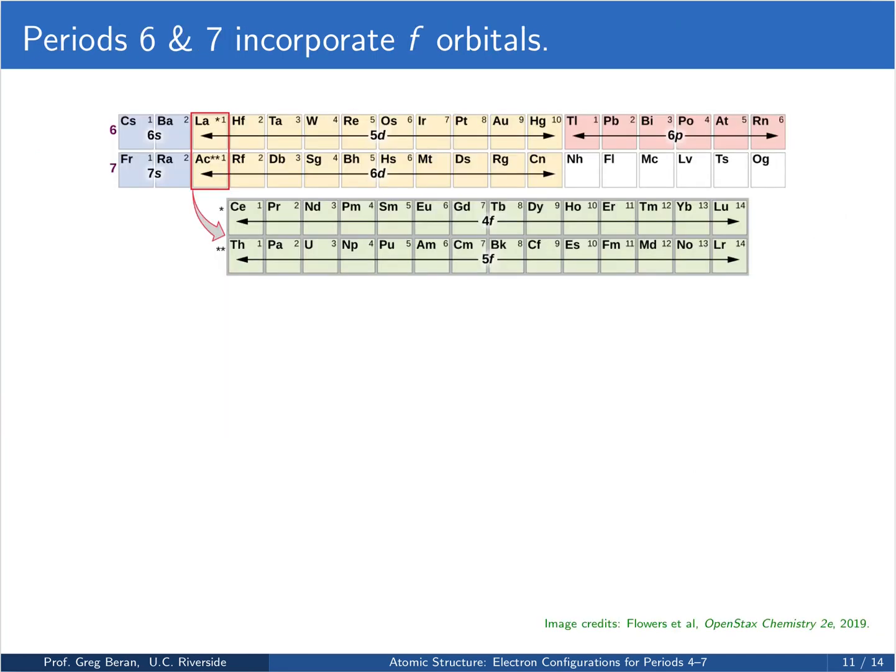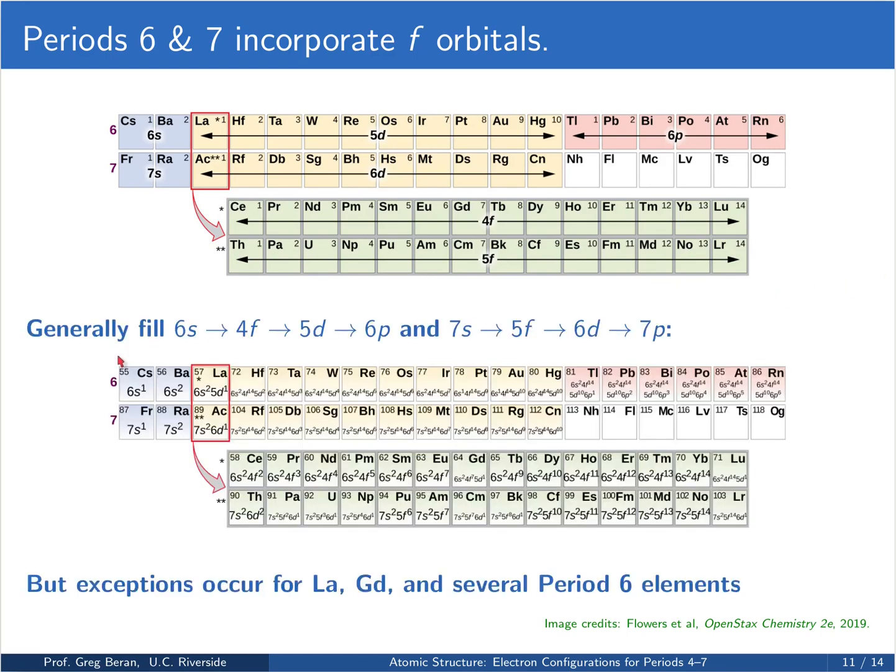Once we get to periods 6 and 7, we have to start worrying about the f orbitals. Based on the energetic stabilities of these orbitals that we talked about earlier, you'd expect to fill the 6s, then the 4f, then 5d, then 6p in period 6, and in period 7 you'd have the 7s, 5f, 6d, then finally 7p.